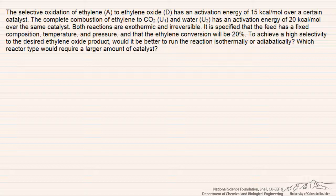We'll just draw this as a very simplified scheme that we have some kind of reactant A, ethylene, that can be oxidized to produce the desired product D or undesired products U.